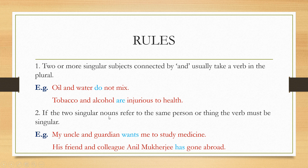Next: if the two singular nouns refer to the same person or thing, the verb must be singular. Look at this example: 'My uncle and guardian wants me to study medicine.' In the subject, two nouns — uncle and guardian — are joined with the help of 'and'. But they refer to the same person; whoever is my uncle, he is my guardian also. So we have to consider this subject as singular, and therefore use a singular verb here.